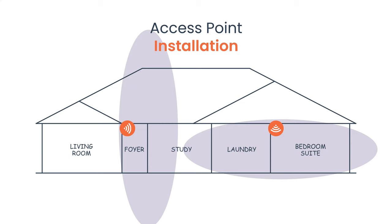If a wall mount is the only option, you can't change physics — work with it intentionally. Determine how many additional APs are needed to compensate. In this scenario you'd need to add at least one AP to the living room and likely one to the study to maintain seamless coverage. This is straightforward to address in the design phase; far more difficult once installation has already started.